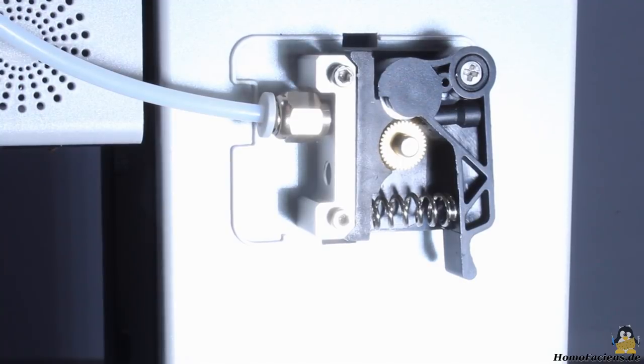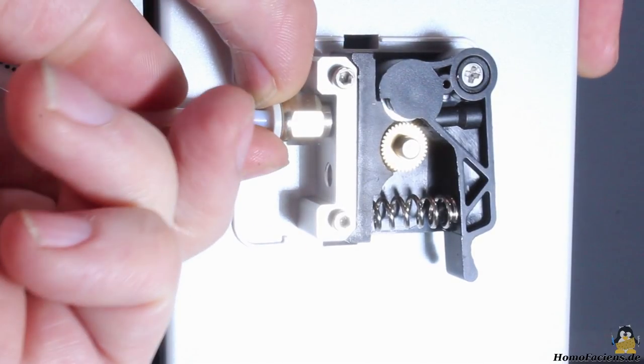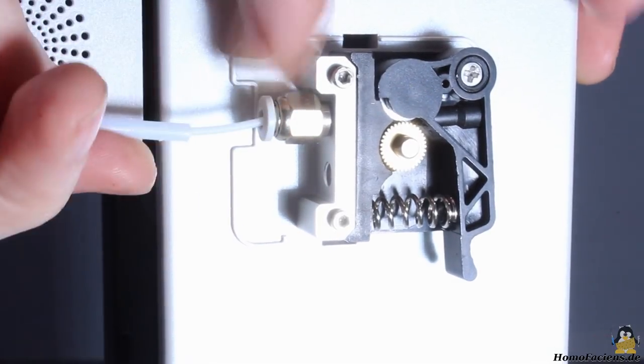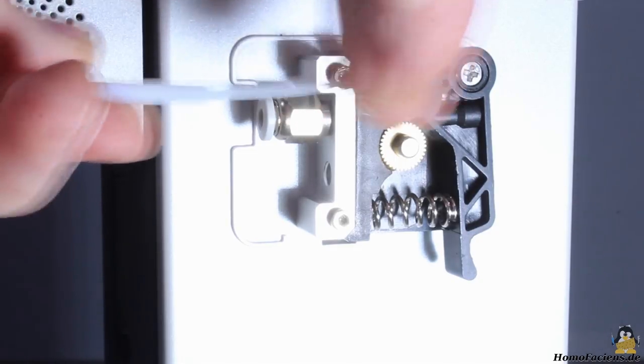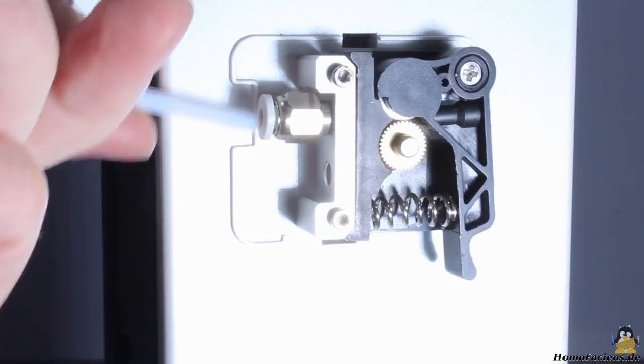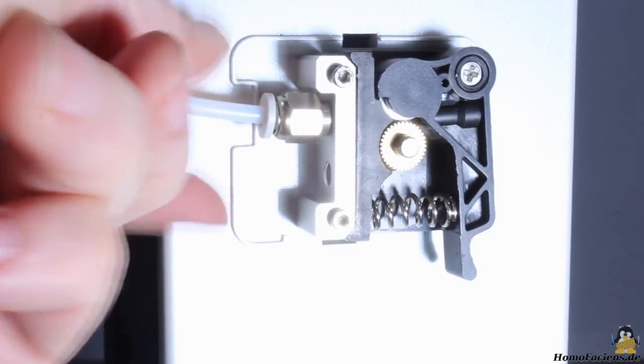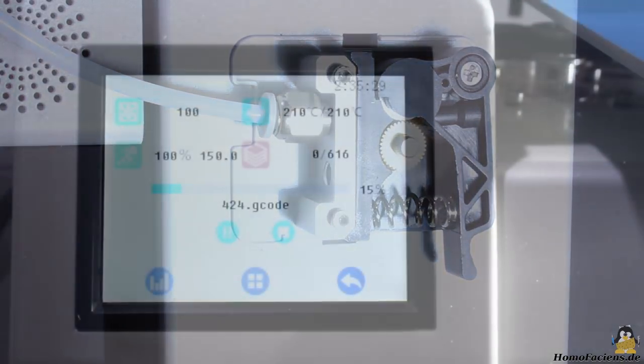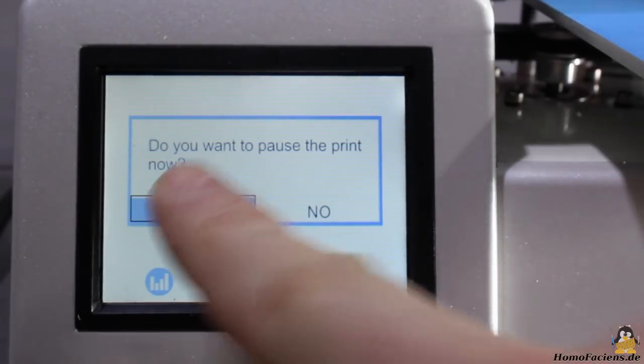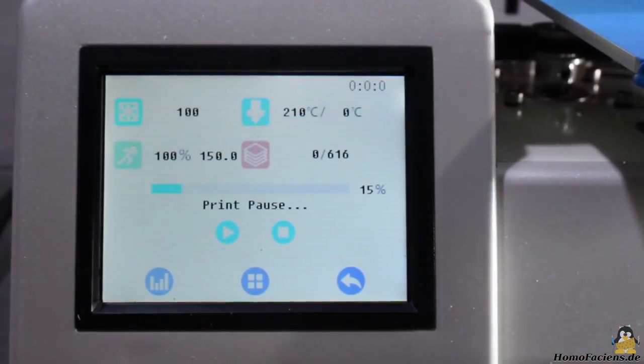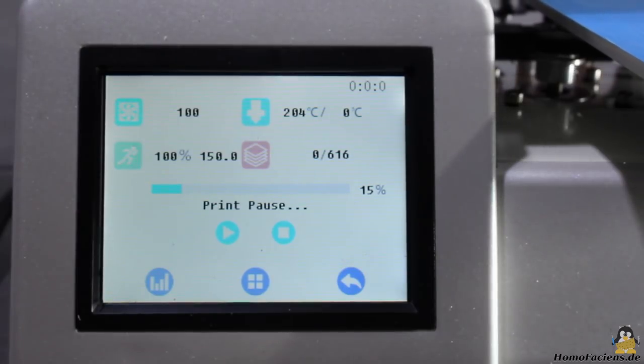To get the filament out, you must unlock the Teflon tube by pushing the ring and pulling out the Teflon tube afterwards. Now you can pull out the filament and reinsert the Teflon tube. Having a filament sensor would be nice, all you can do without that switch is pausing the job manually before running out of filament.